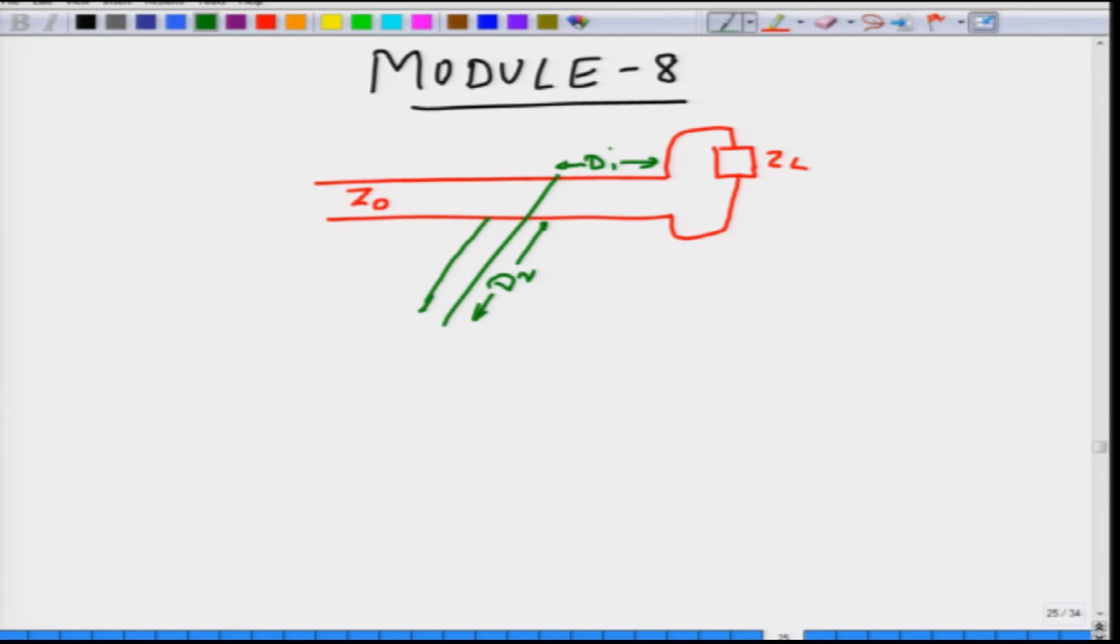In the previous problem, you were given D1, given D2, you were given Z naught and ZL. And you were asked to find out what is the input impedance at this particular plane or rather we found that it is easier to deal with admittances. Therefore, we were asked to find out what is the normalized input admittance at this plane. And we found that this was actually equal to 1. And it was equal to 1 because two things happened. One, you start off with ZL and then you converted first ZL to ZL bar. From ZL bar you converted that into YL bar.